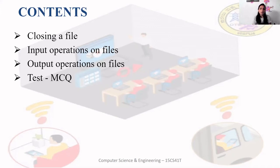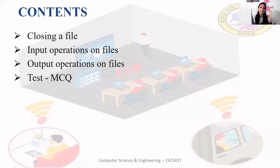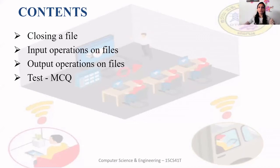In a C program you see the output on a console — the black output screen. Whenever you want to read some value, you use scanf on the console; whenever you want to write something, you use printf. Now if a C program wants to read from a file instead, some special functions are needed, and we will study those today.